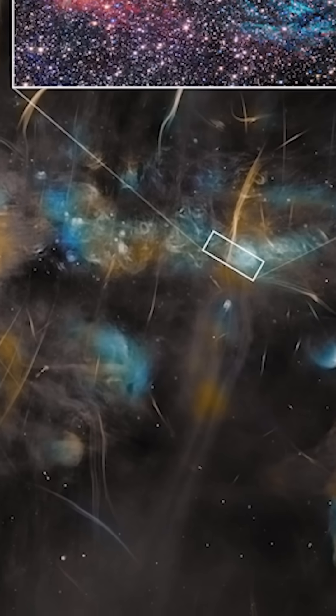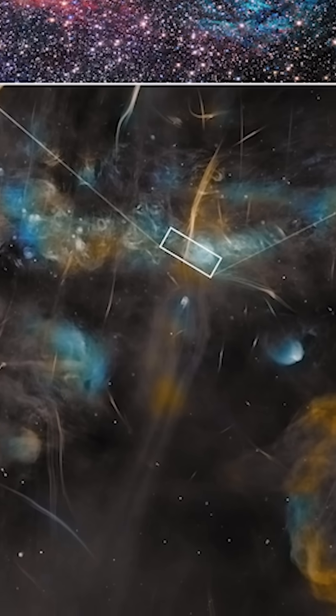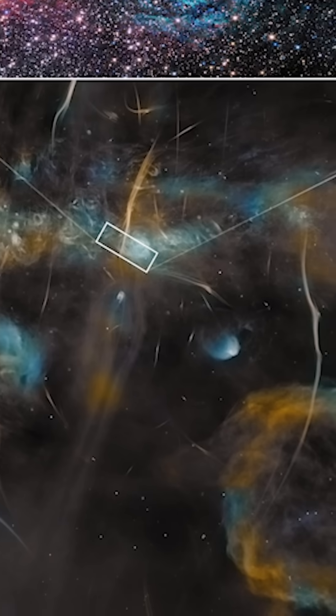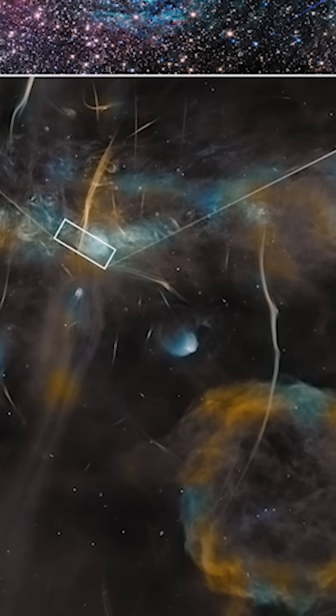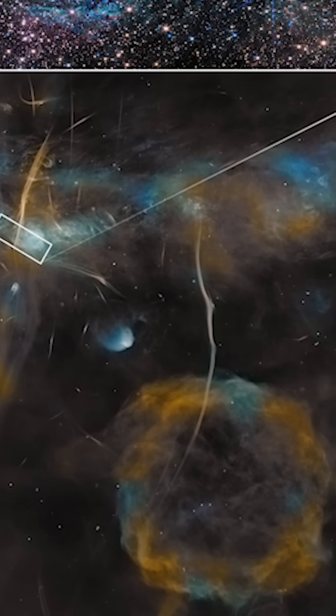The Webb inset shows stars and gas clouds in red, with an arching cloud of bright cyan that contains many straight, needle-like features that appear more crystalline than cloudy.